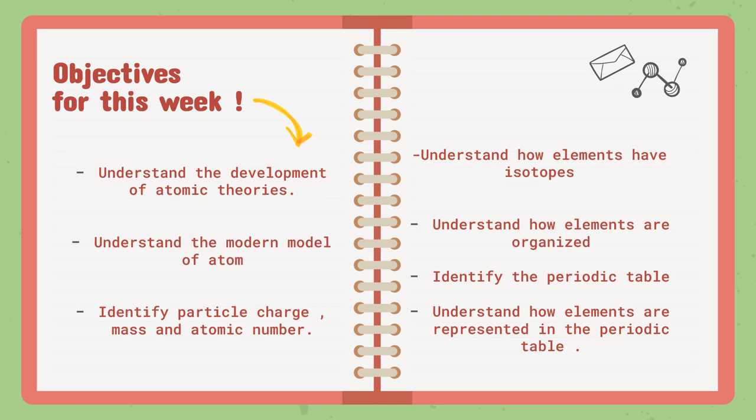As for the second lesson objectives, we have understanding how elements are organized. We have a lot of elements, and we are going to organize them in the periodic table. We will identify what the periodic table is, who is the scientist that first created it, and how the periodic table changed from old days to modern days. Then we are going to understand how elements are represented in the periodic table — how it is shaped and how the elements are found inside it.